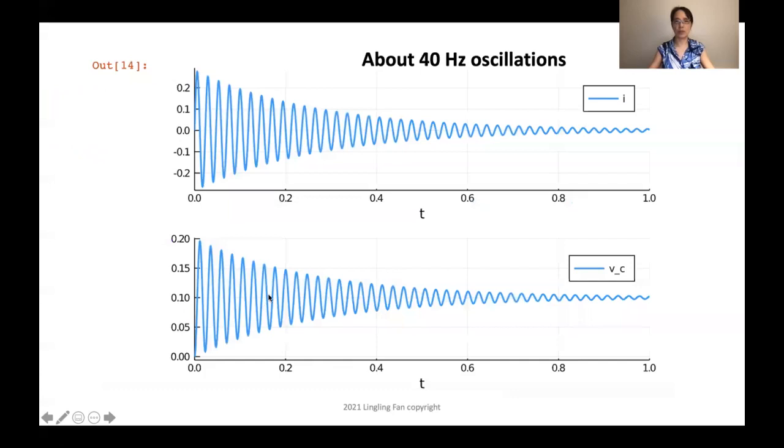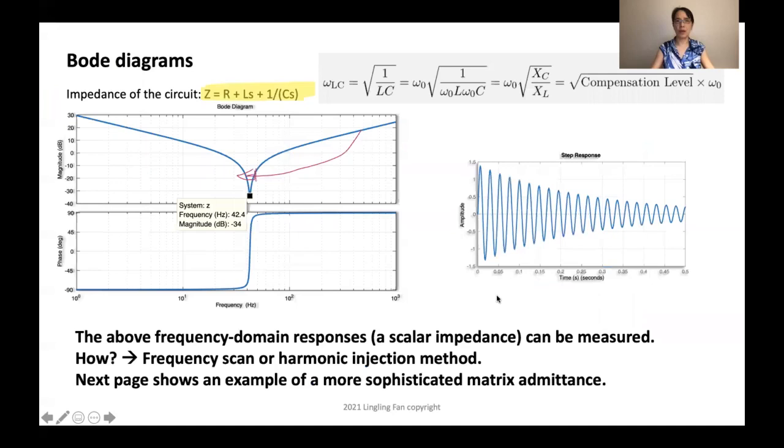So first, let's just solve this in Julia doing time domain simulation. You use differential equations and using plots, and we can quickly see that this is great to see that you can show this 40 hertz oscillation for excitation. In this case, we give a step response for the incoming voltage source. Then the current has 40 hertz and also the capacitor voltage has 40 hertz.